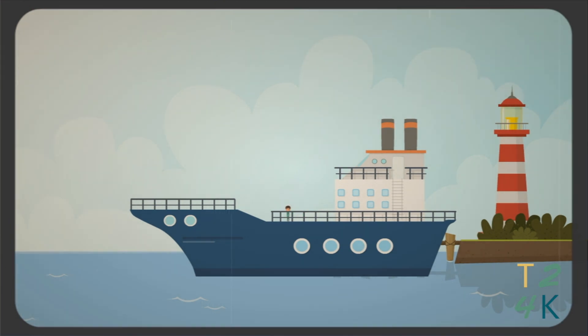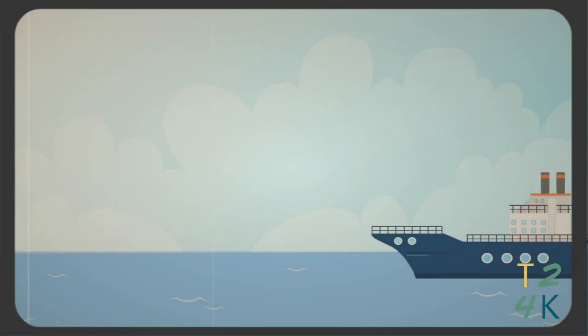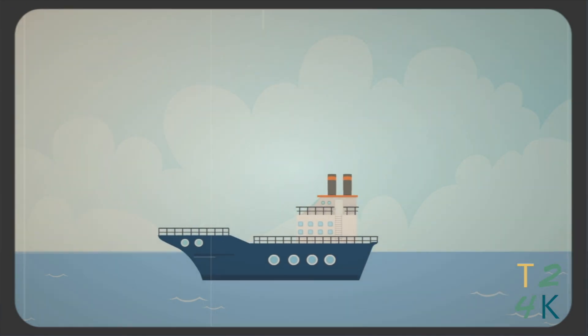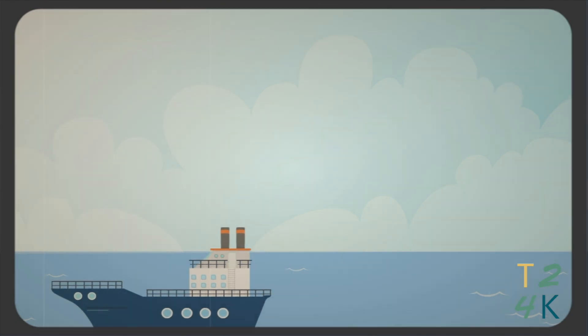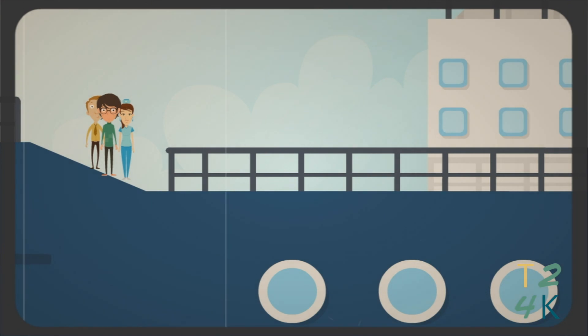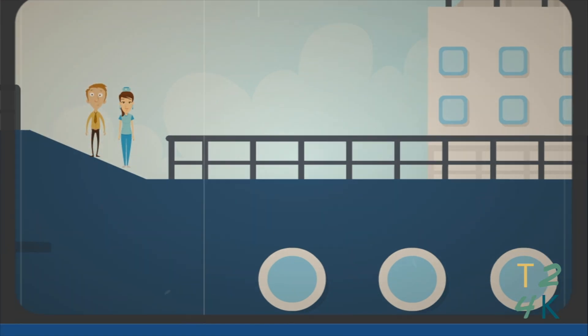While out at sea, a great storm raged and the sailors were scared. They knew Jonah was running from his God. They demanded that Jonah ask his God to calm the waters. When God did not, they decided to throw Jonah overboard. The waters calmed and the sailors praised God.